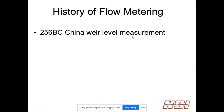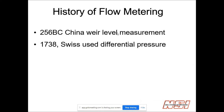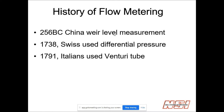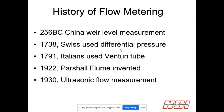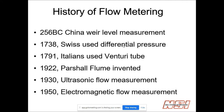A little history of flow metering. In China, 256 BC, somebody looked at a dam they built and said the level's going up as the flow increases — they were measuring flow by how high the level was over the top of the dam. In 1738, the Swiss used a differential type of flow measurement. In 1791, the Italians used a Venturi tube. In 1922, the Parshall flume was invented by Bob Parshall. In 1930, ultrasonic flow measurement. And 1950, electromagnetic flow measurement. Today we're focusing mostly on what you might see in a wastewater or water treatment facility.